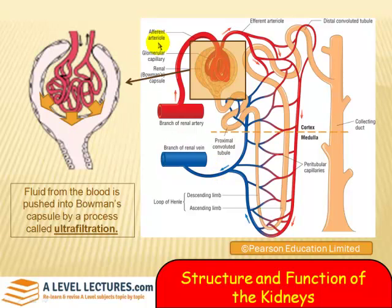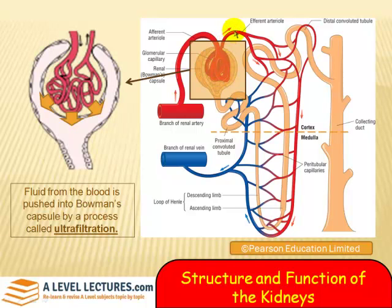Here is Bowman's capsule with the glomerulus in the middle. Fluid from the blood is pushed into Bowman's capsule by a process called ultrafiltration. The efferent arteriole has a smaller diameter than the afferent, which means very high pressure builds up inside the glomerulus. High pressure squeezes all the smaller molecules into Bowman's capsule. Left behind are very high molecular weight molecules — proteins particularly — and red blood cells. Everything else with smaller molecular weight is squeezed through into Bowman's capsule. We call this process ultrafiltration.